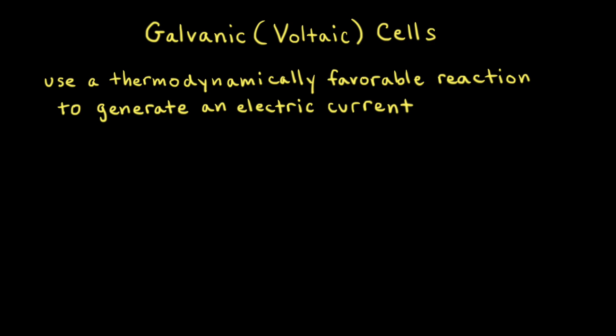Galvanic cells, which are also called voltaic cells, use a thermodynamically favorable reaction to generate an electric current.